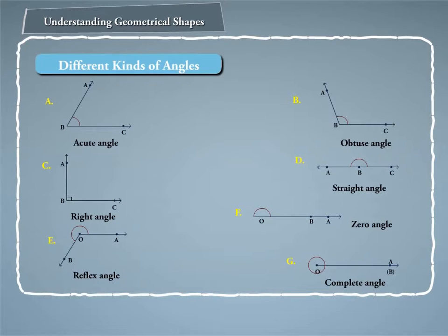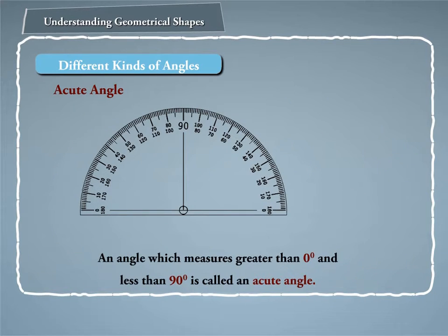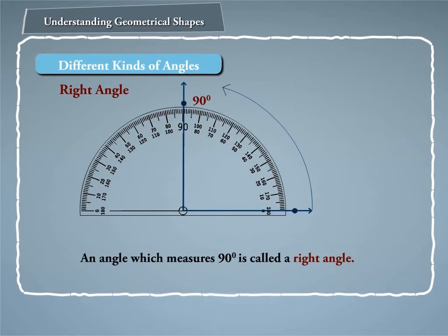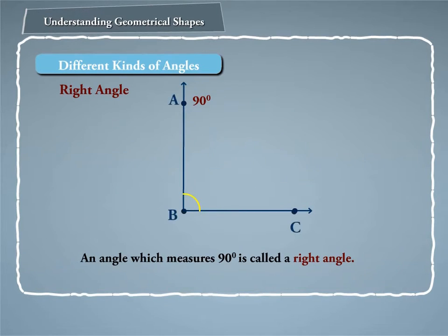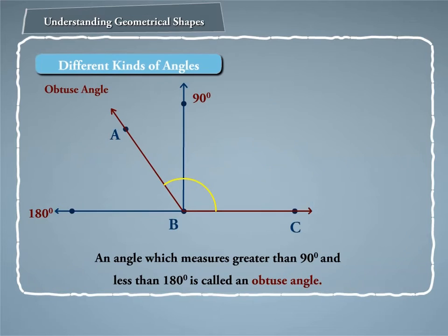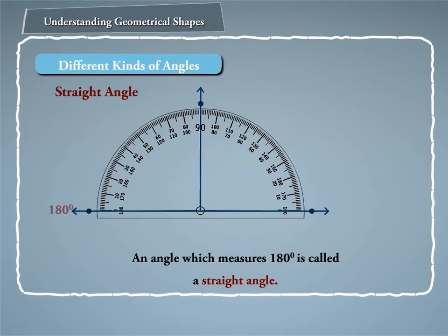Let us understand different kinds of angles. Angles are classified according to their degree measure. An angle which measures greater than 0° and less than 90° is called an acute angle. In the figure, angle ABC is an acute angle. An angle which measures 90° is called a right angle. In the figure, angle ABC is a right angle. An angle which measures greater than 90° and less than 180° is called an obtuse angle. In the figure, angle ABC is an obtuse angle.